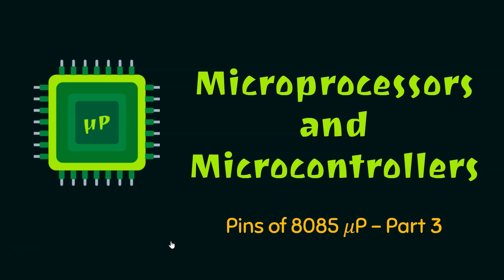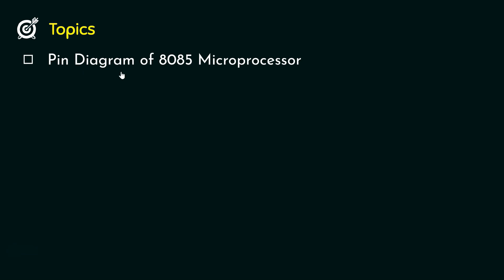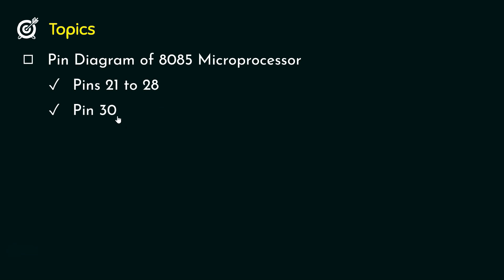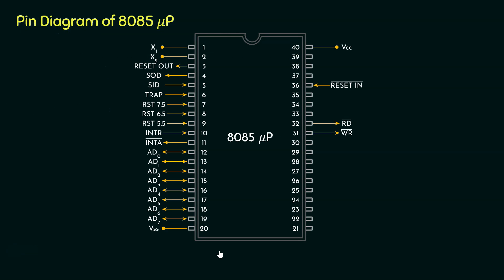Hello everyone and welcome back to the series Pins of 8085 Microprocessor. Today we are in part 3. Coming to the topics we are going to cover in this session, from the pin diagram of the 8085 microprocessor we are going to learn about pins 21 to 28 first, and thereafter we will learn about pin 30. So let's begin.